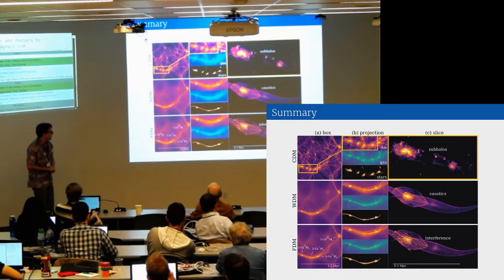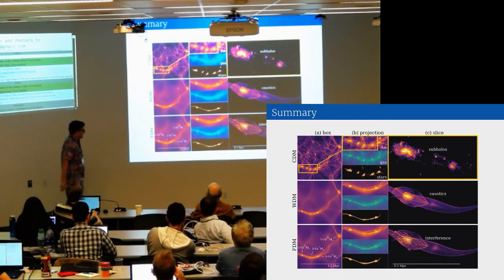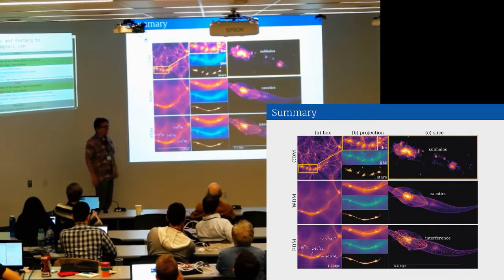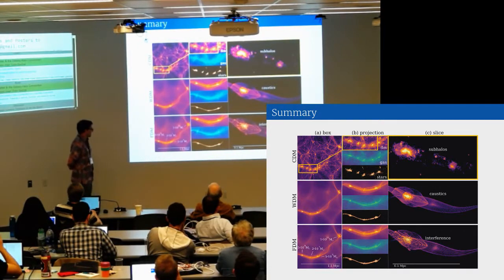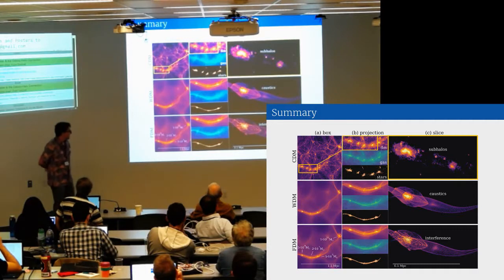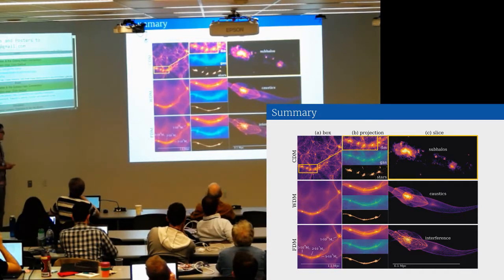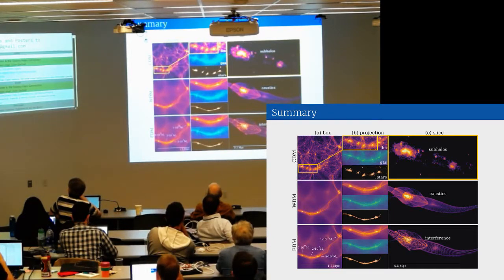These stretched filamentary first galaxies are one of the predictions of fuzzy and warm dark matter, which could be visible with JWST.